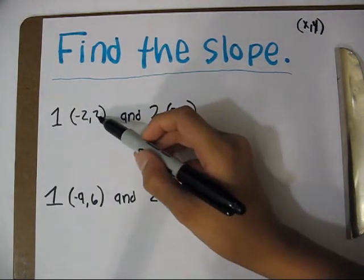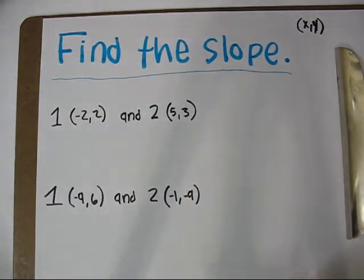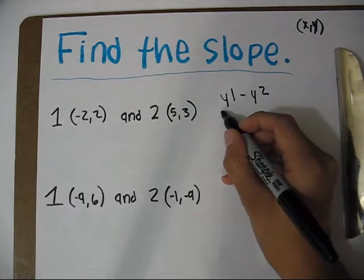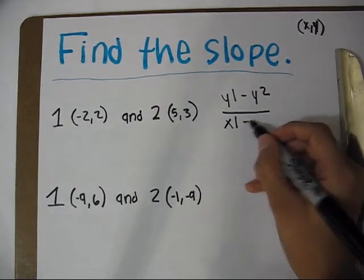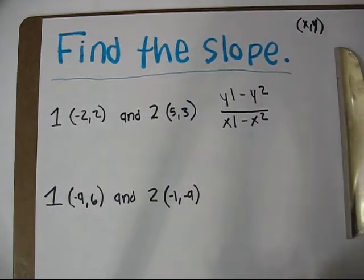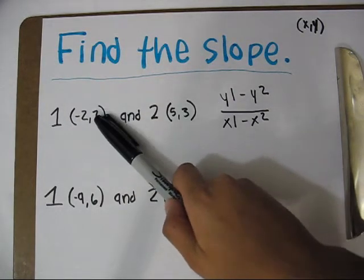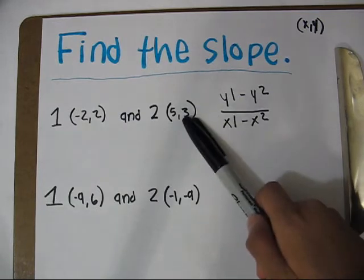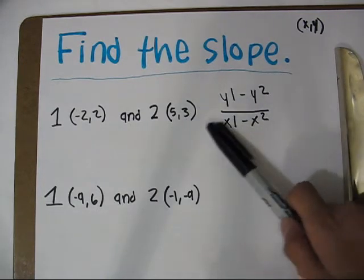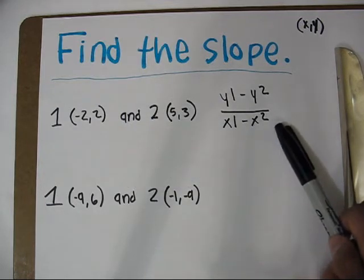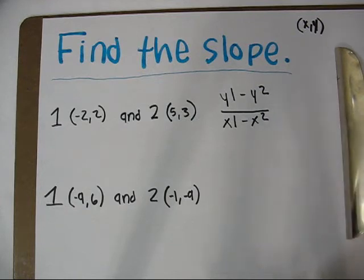This is saying that this is x, this is y, this is x, this is y. So what we do is y1 minus y2 divided by x1 minus x2. So what that is saying is that we do y of 1, so that is 2, minus y of 2 which is 3. We divide that by x of 1 which is negative 2 and we subtract that by x of 2 which is 5. We divide that and then we get our slope.